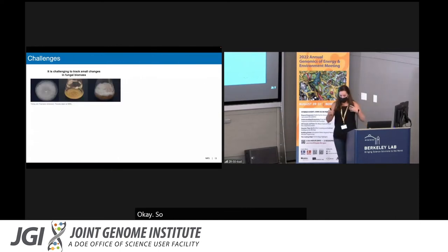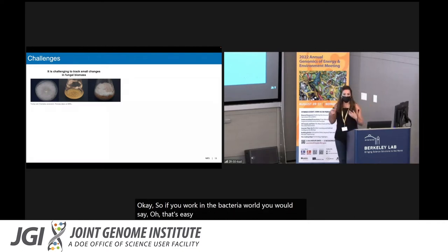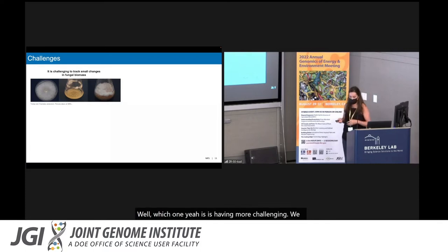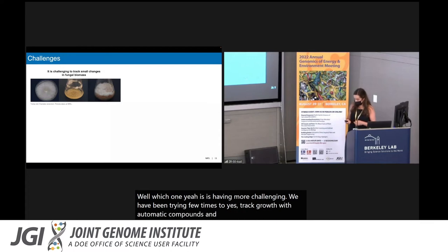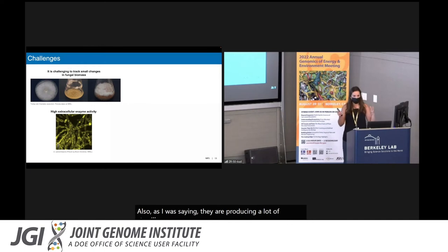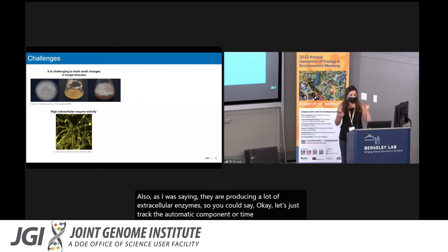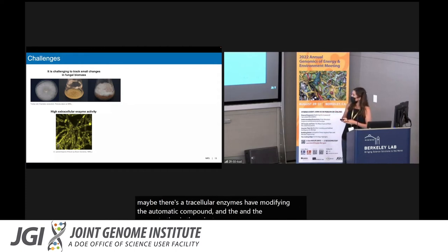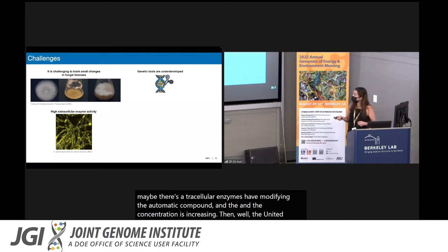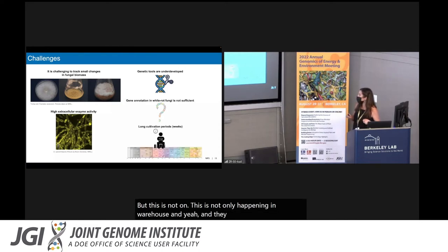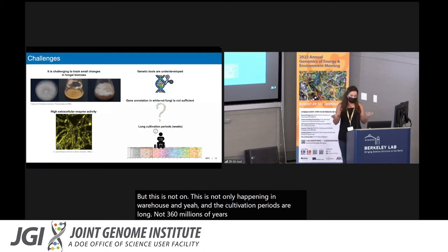If you work in the bacterial world, you would say, oh, that's easy. If we want to know if the fungi are utilizing aromatic compounds as a carbon source, and if they have these intracellular pathways, let's just grow the organisms and measure OD. Well, with fungi, it's a bit more challenging. We have been trying a few times to just track growth with aromatic compounds, and I can tell you that we don't have conclusive data. Also, as I was saying, they are producing a lot of extracellular enzymes. So you could say, okay, let's just track the aromatic compound over time, and if it decreases, it's being utilized. Not really, because maybe those extracellular enzymes are modifying the aromatic compound, and the concentration is decreasing. Genetic tools are underdeveloped. The gene annotation is still limited, but this is not only happening in white rot fungi. And the cultivation periods are long, not 360 million years, but a few weeks.